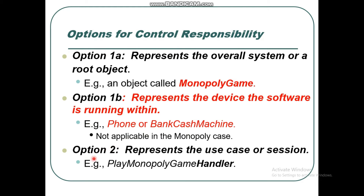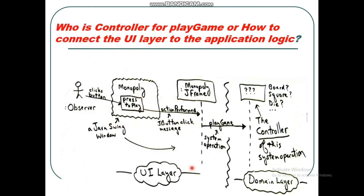Option 2 represents the use case or session. Option 3 is a play Monopoly game handler. The key question is: who is the controller for play game and how do we connect the user interface layer to the application logic? Your controller class handles the play game operation and connects the UI layer.